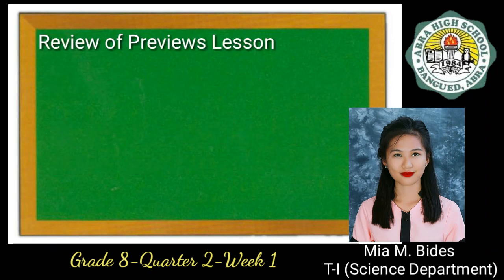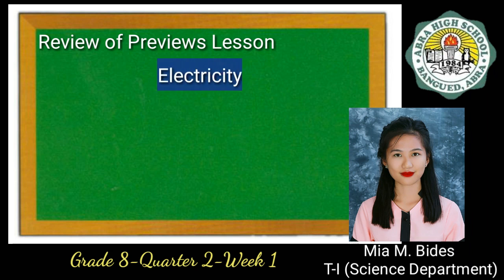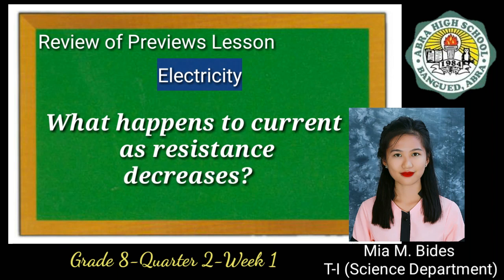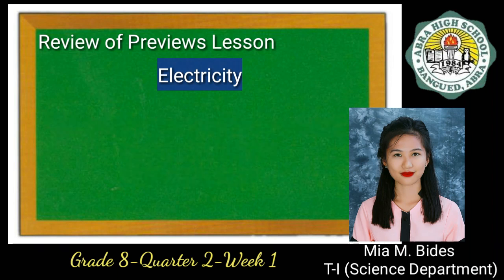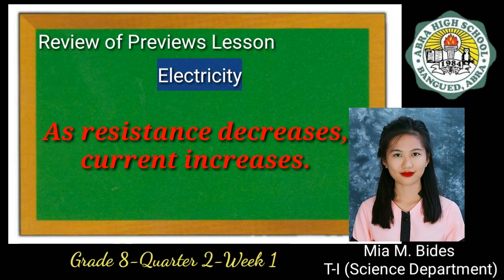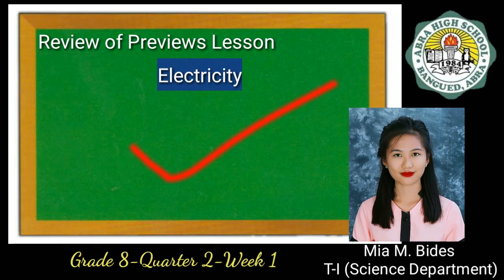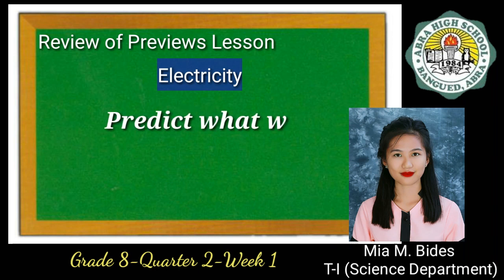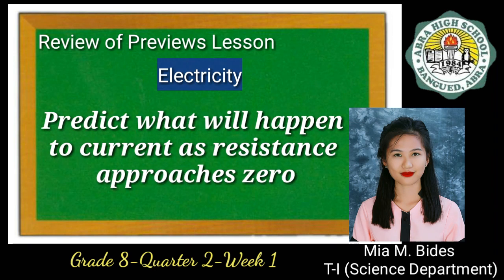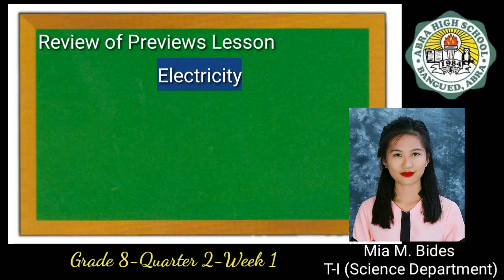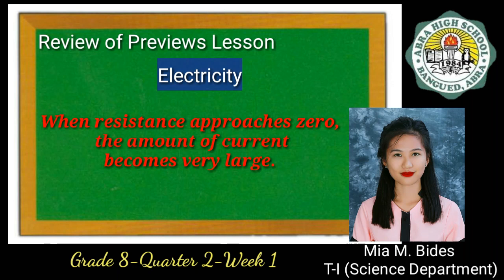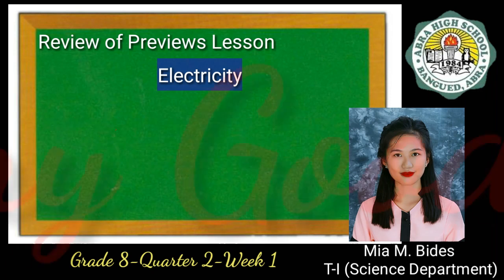Let's recall what you have learned in our last topic, which is about electricity, by answering the following questions. What happens to current as resistance decreases? If your answer is: as resistance decreases, current increases — you are correct! Next, predict what will happen to current as resistance approaches zero. The answer is: when resistance approaches zero, the amount of current becomes very large. Did you get the correct answer? Very good!